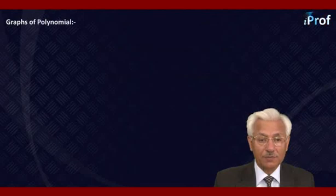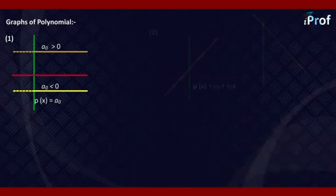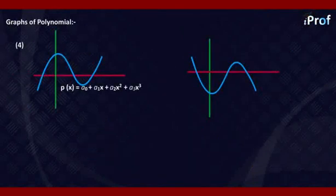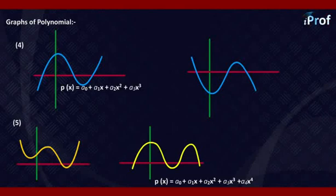Then we have graphs of polynomials. P(x) equal to A0, where A0 is a constant, is a straight line parallel to the x-axis. P(x) equal to A0 plus A1x represents a straight line. P(x) equal to A0 plus A1x plus A2x squared is a quadratic polynomial and it represents a parabola. P(x) equal to A0 plus A1x plus A2x squared plus A3x cubed represents a curve which has two bends. Similarly, P(x) equal to A0 plus A1x plus A2x squared plus A3x cubed plus A4x raised to the power four represents a curve which has three bends — either in the shape of a W or in the shape of an M.